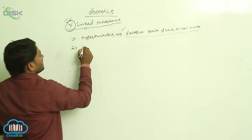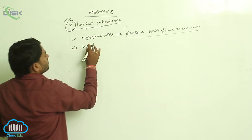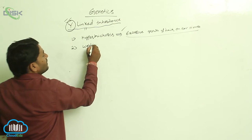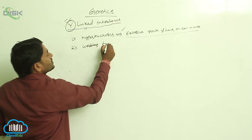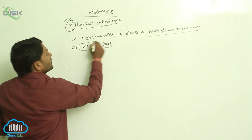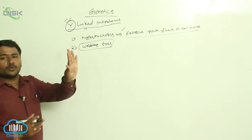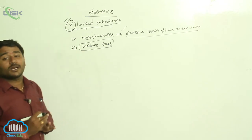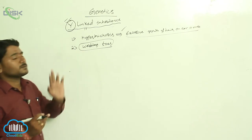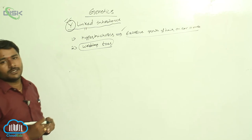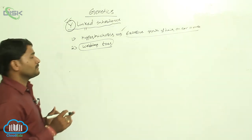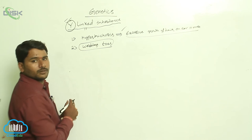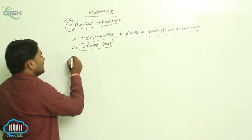The second example is webbing toes — jointed toes. Web means a network-like structure, toes means fingers, so joined fingers can be seen. That is called webbing toes.